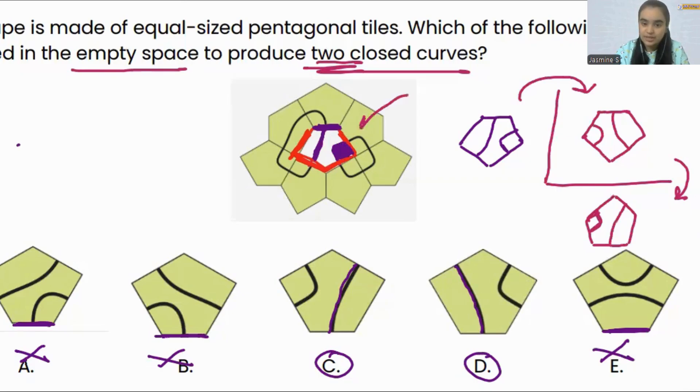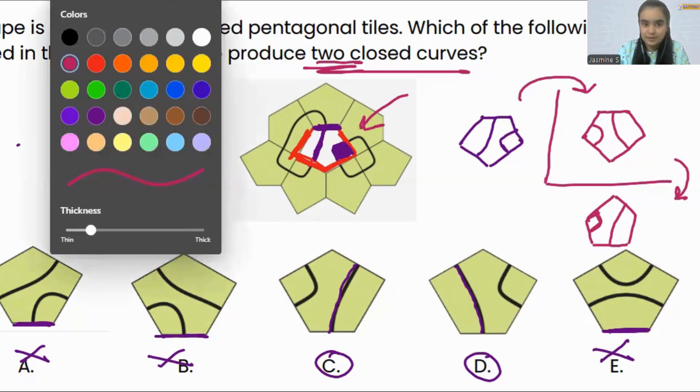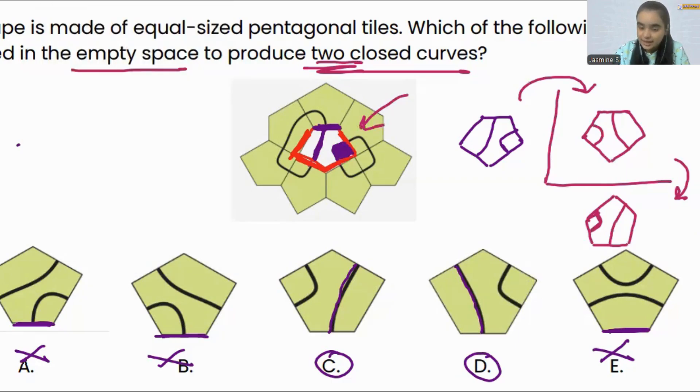Because in the figure which they have provided us, the pentagon is upside down. Now, if you look at the shape carefully which we have made, it looks very much similar to C. So that's how our correct answer is C here.